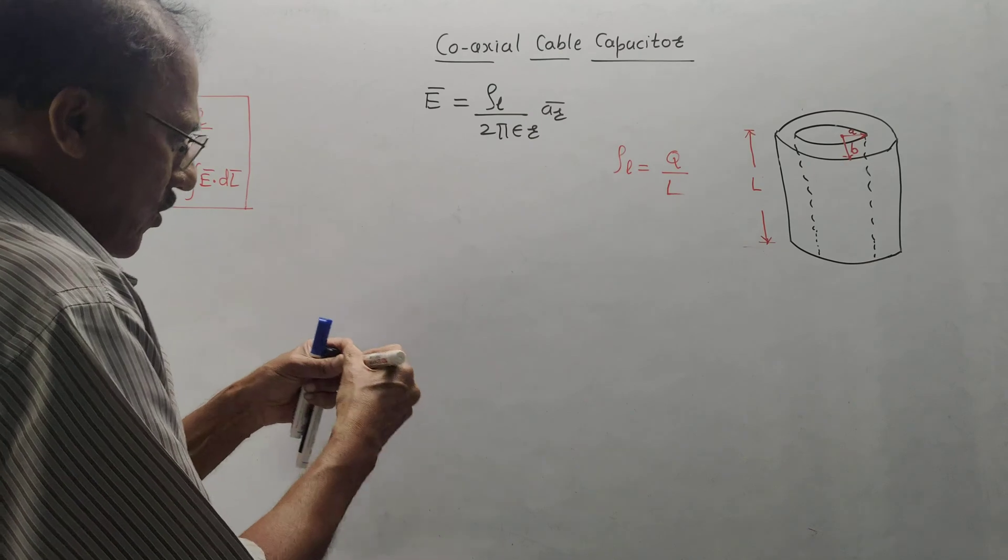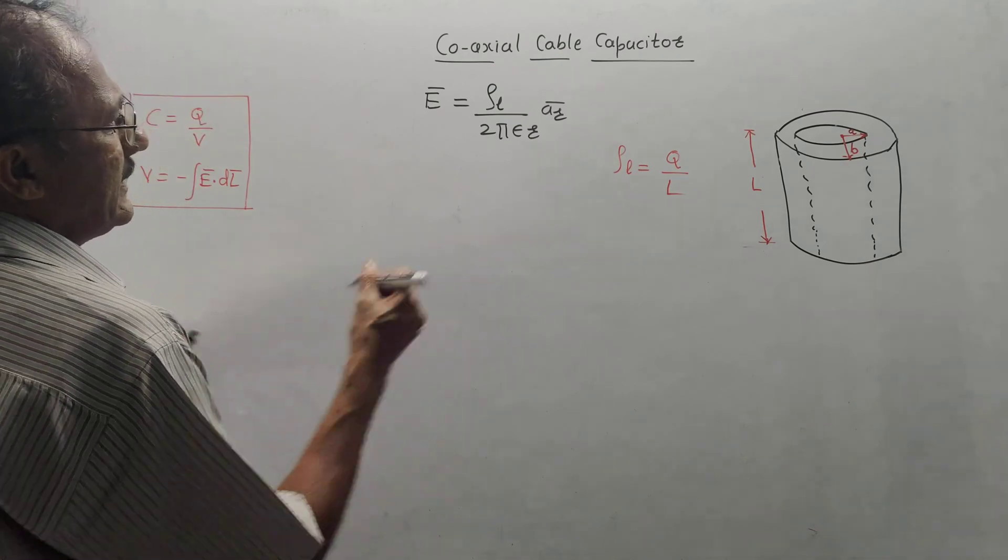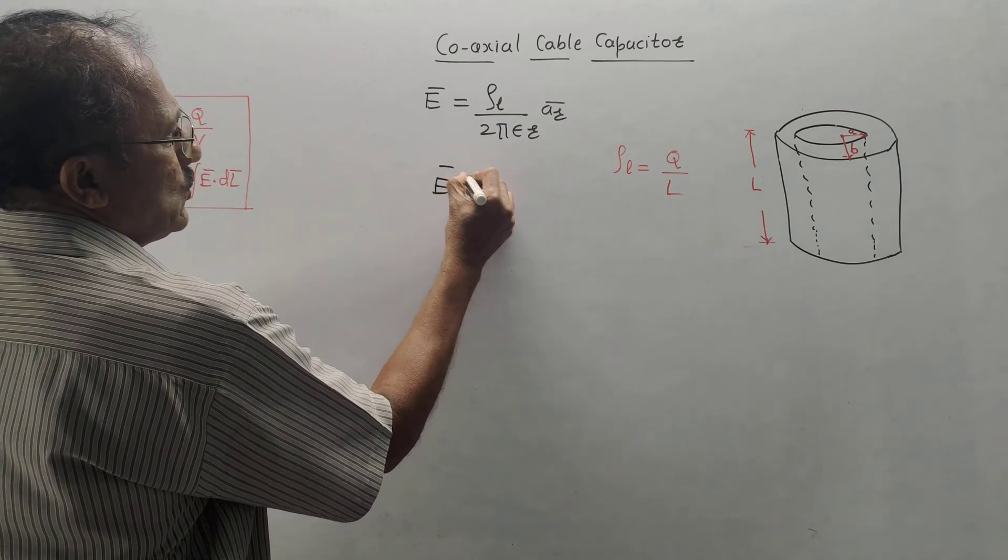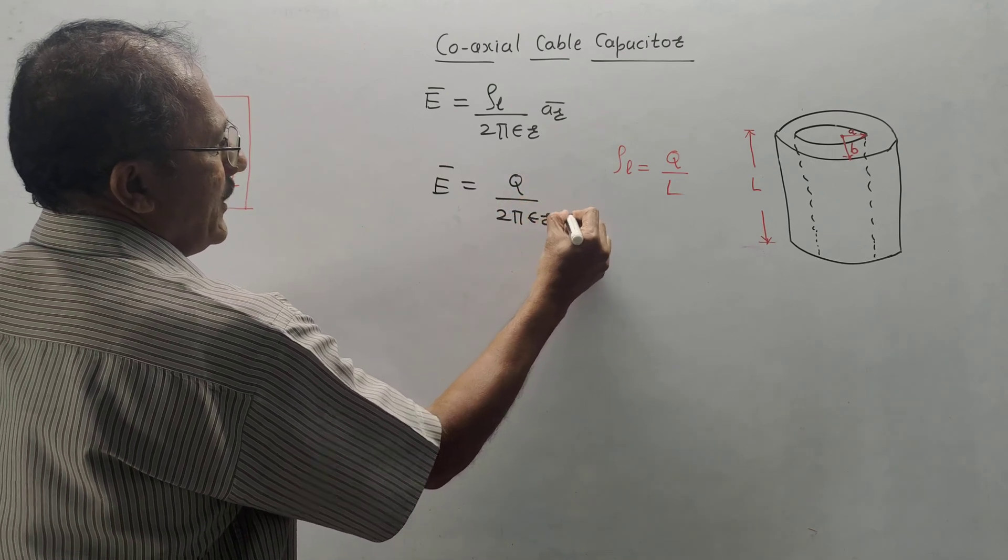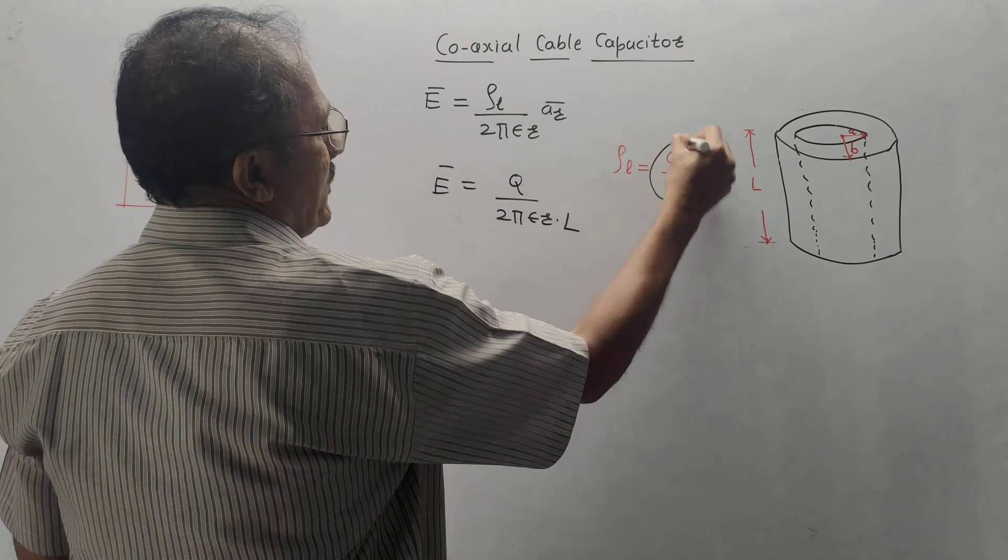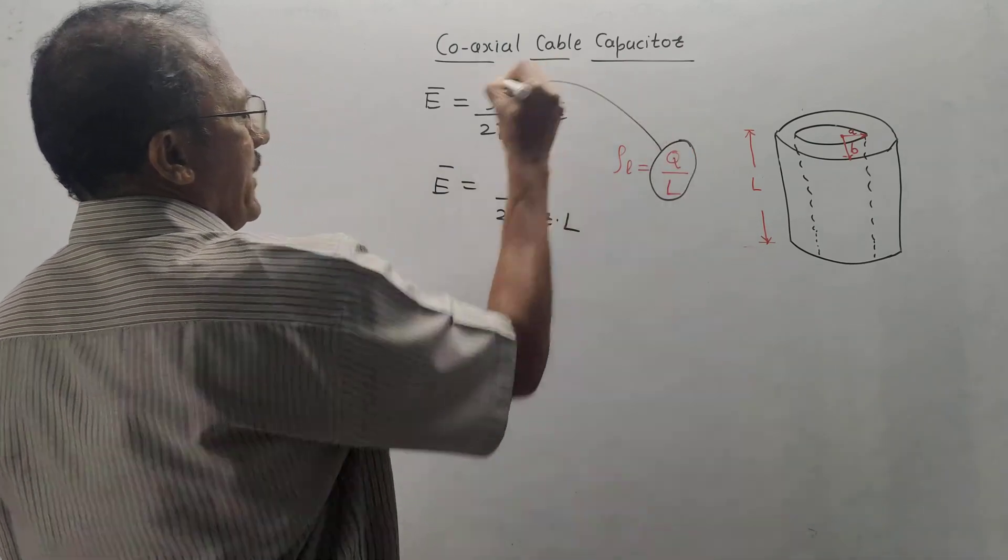So, same equation of e bar can be written as e bar equals Q upon 2 pi epsilon R into L. I have simply put the value of rho L over here.